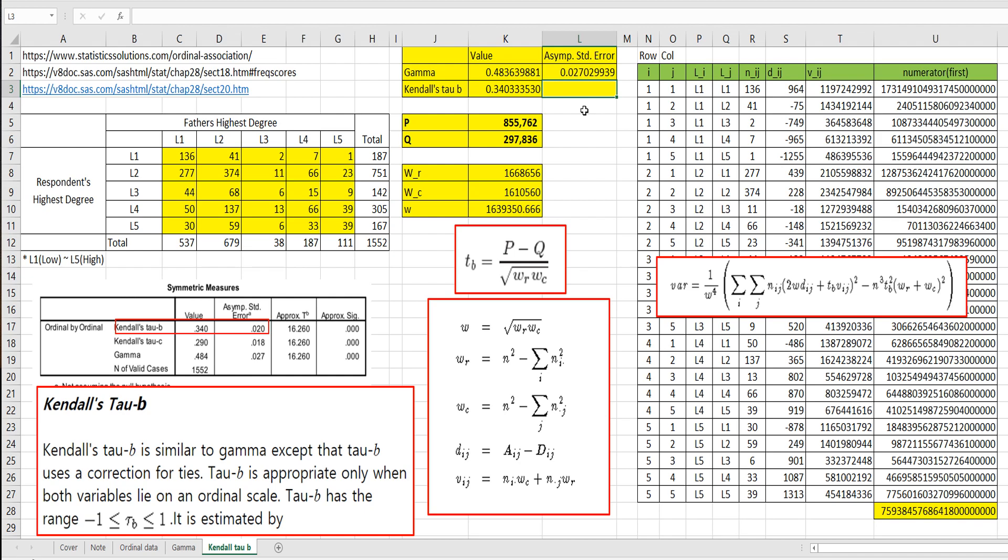And finally, to calculate asymptotic standard error, we need to use square root, SQRT, and the first part here, and minus, and 3 multiplied by tau B squared, multiplied by WR plus WC, and square it. Close the form, and over W to the first. So W to the first. So yeah, our result is same as SPSS.